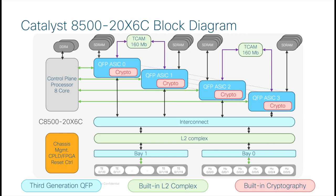There is a high-speed interconnect between all of the QFP ASICs, allowing them to exchange information about packet flows as load-based distribution may send packets for a given flow to threads across multiple ASICs. There is also an integrated L2 complex that enables line-rate MACSEC, completely separate from the QFP data plane processing — so there is no performance penalty for enabling MACSEC. Each QFP has dual 120 gigabit per second connectivity to the physical interfaces, enabling non-blocking direct access and eliminating any potential performance bottlenecks.